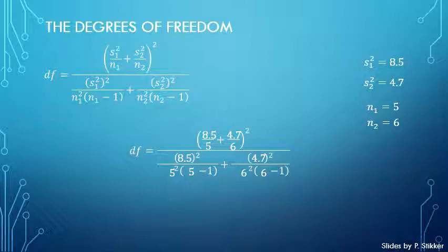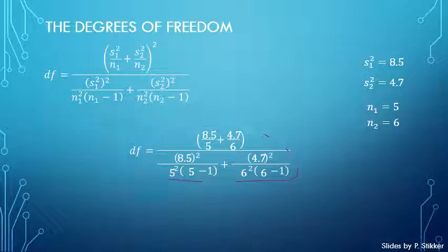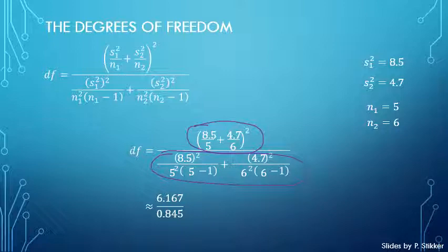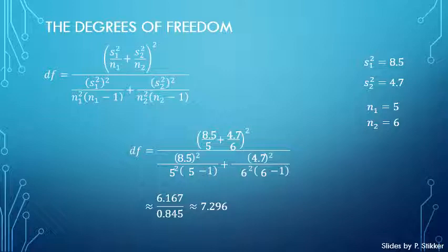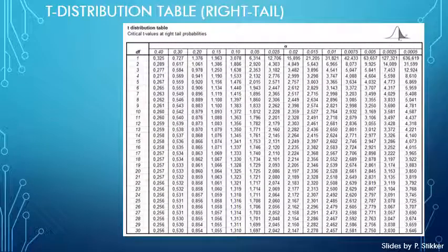With no unknowns remaining, it's just a matter of calculating. The numerator becomes approximately 6.167 and the denominator becomes approximately 0.845, giving us degrees of freedom of roughly 7.296. So although this formula looks intimidating, all the values were already calculated when computing the variances and the means.